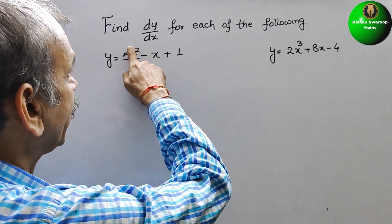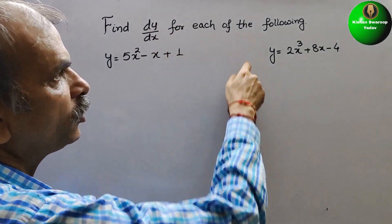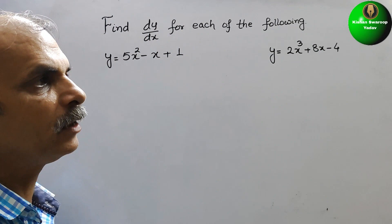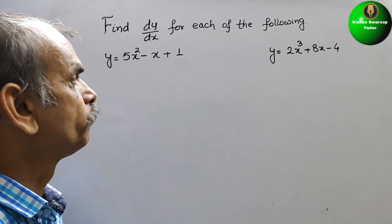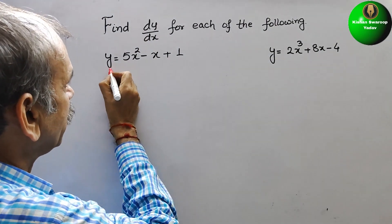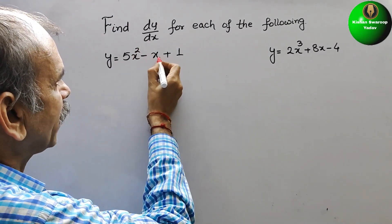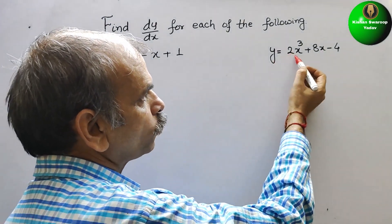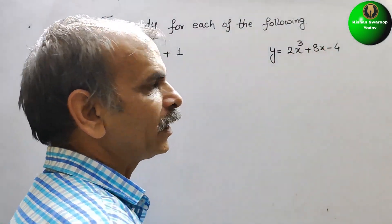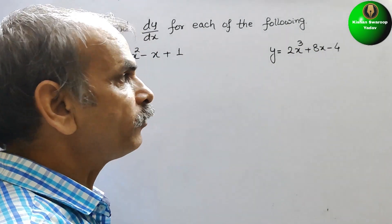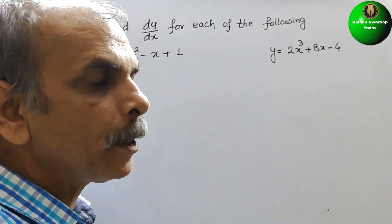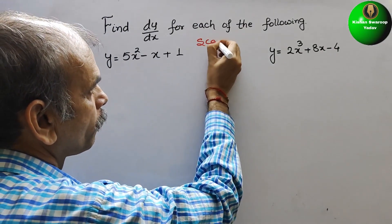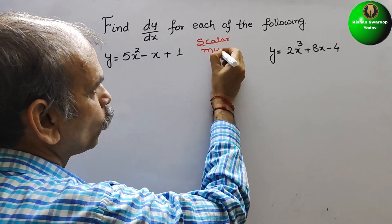The question asks to find dy/dx for each of the following, that means we have to find out the differentiation. Here they have given y = 5x² - x + 1, and here they have given y = 2x³ + 8x - 4. So here what we will do, we will go for the scalar multiple rule.